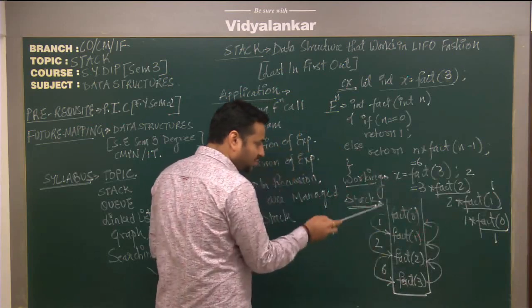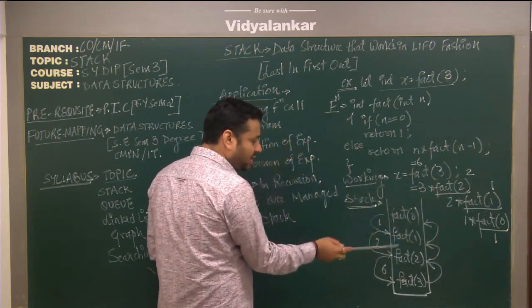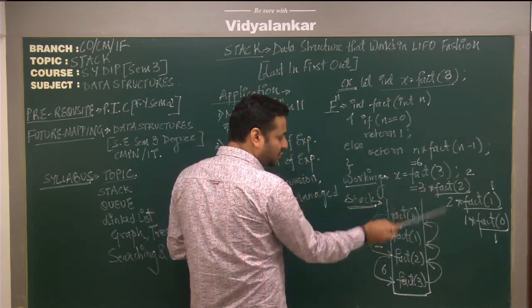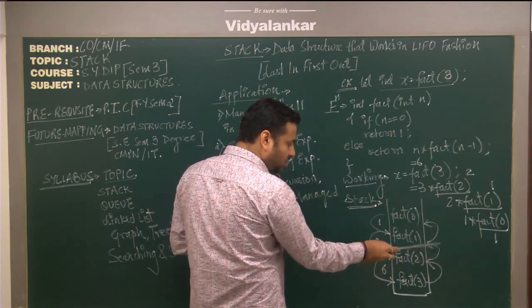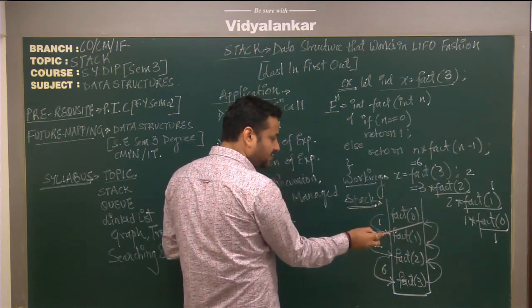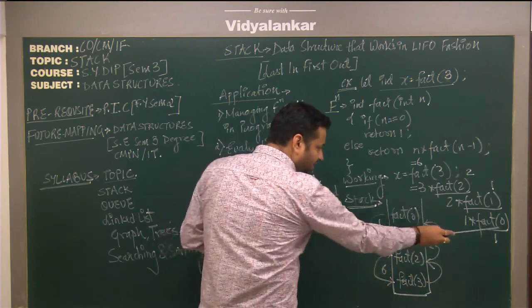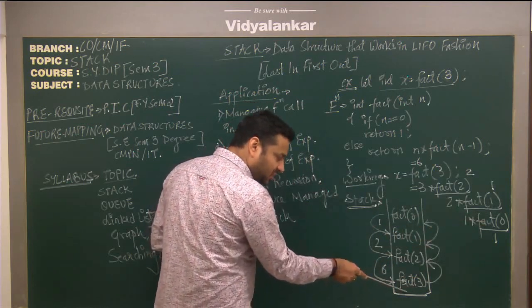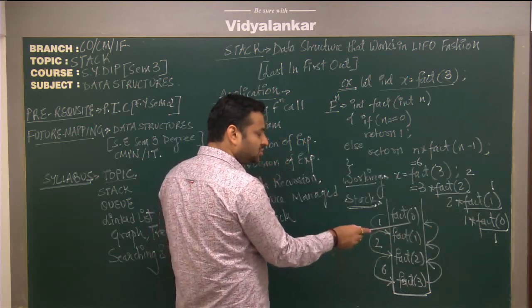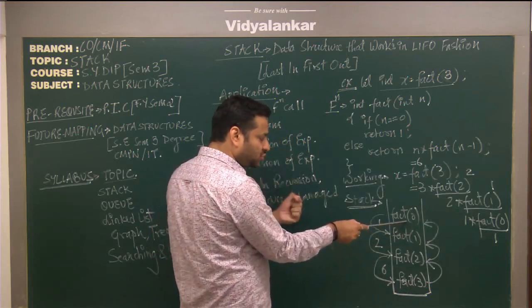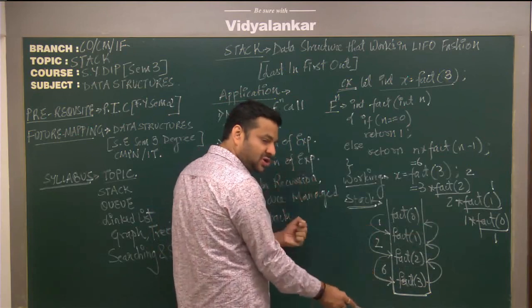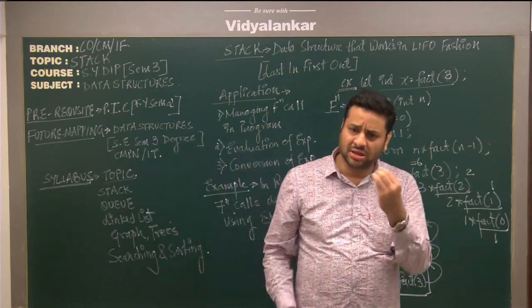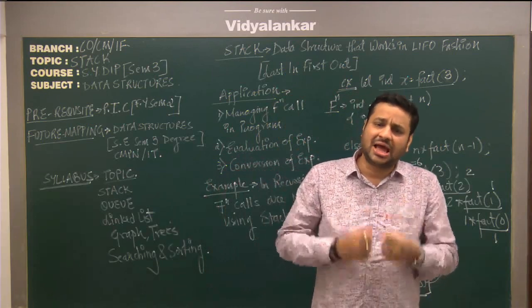Now let us see how this is actually implemented using a stack. As you can see, the stack opens at the top. The first function call that goes into the stack is fact(3), it calls fact(2), which calls fact(1), which calls fact(0). Fact(0) was the last function to enter but the first to be executed, returning 1, 2, and finally 6. So fact(3) was the last function to be executed — this demonstrates LIFO behavior in recursion.